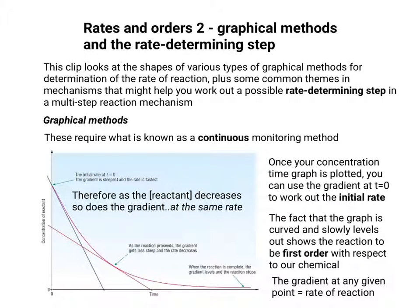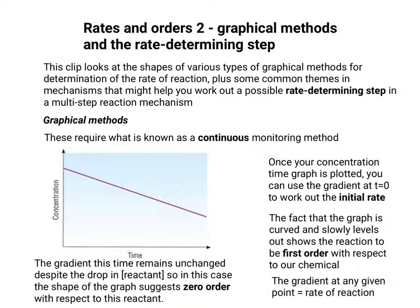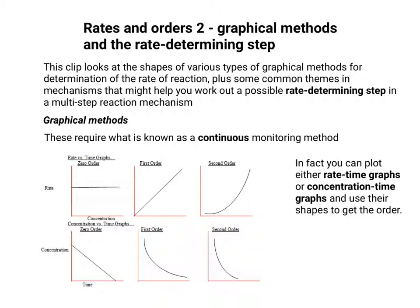The gradient at any given point is going to be the rate of reaction. So as the concentration decreases, the gradient decreases at the same rate. This gives us an idea of how to use the gradient to work out the order. If the gradient remains unchanged in spite of the drop in concentration, the shape suggests that it's zero order with respect to that particular reactant.